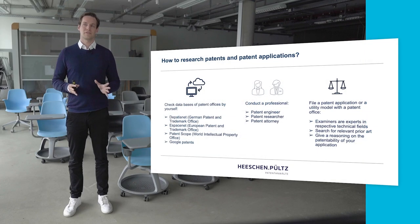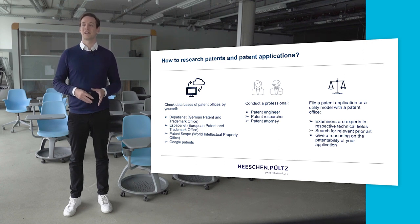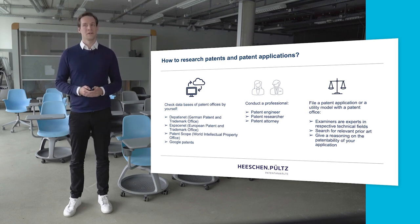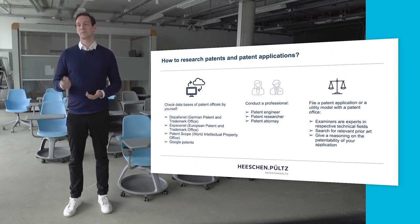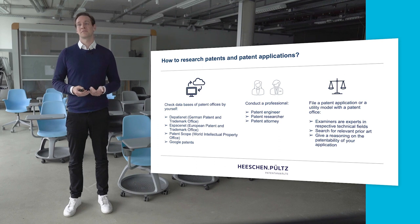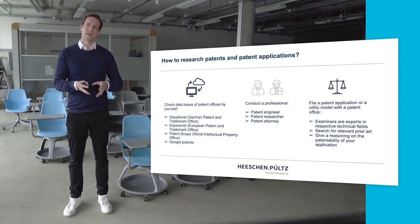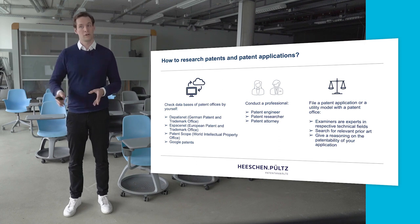If you want to do patent research, there are two to three options. The first one is, if budget is limited, do it yourself — all patent applications normally become available to the public after 18 months, and there are databases from different patent offices you can use. Another option is contacting a professional: an engineer, a researcher, or a patent attorney. The main difference is what you pay per hour. A patent attorney can represent you before the patent office, but others who specialize in research might be cheaper and get you more for your money.